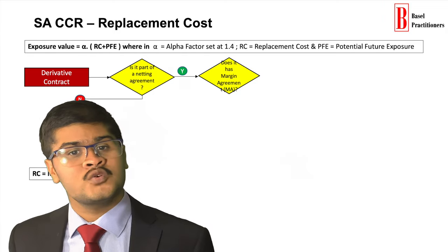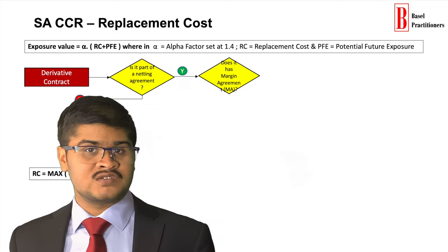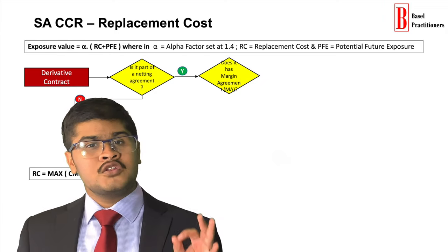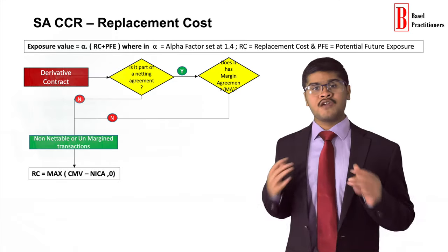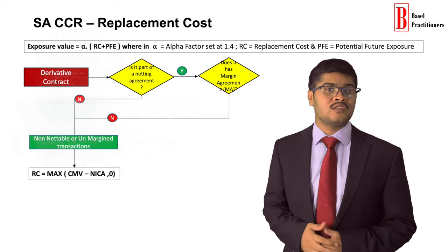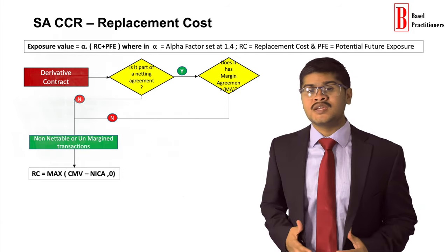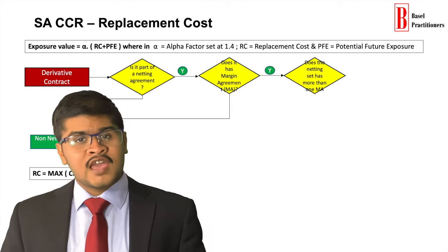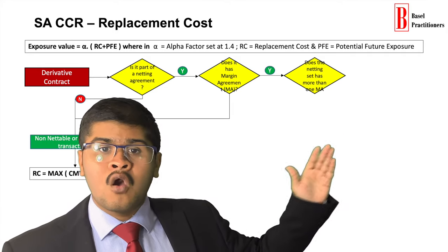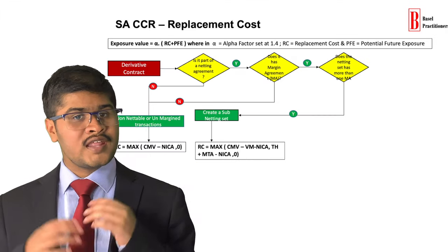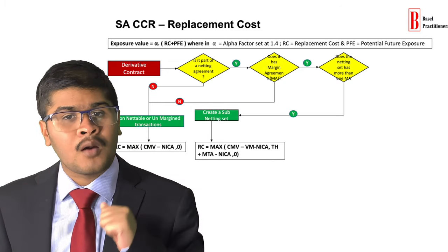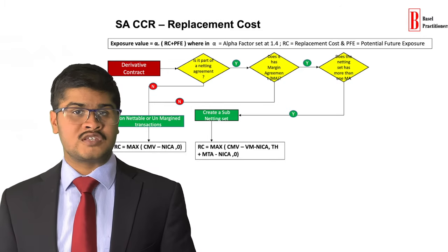If it is netable, then we need to check whether there is any margin agreement in existence or not. A margin agreement is an agreement to exchange variable margins. If non-existing, then it is treated as an unmargined contract and treated at par with non-netable agreement for computing the replacement cost. If a margin agreement exists, then we need to check whether there is one MA or more per netting agreement. If one netting agreement has more than one MA, then we need to create a subnetting set and apply a more complex formula to compute the replacement cost.